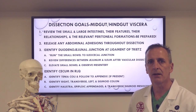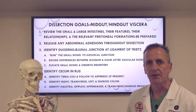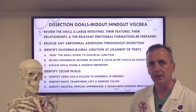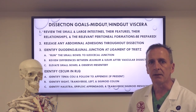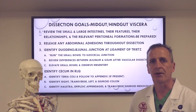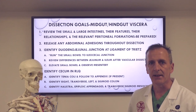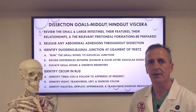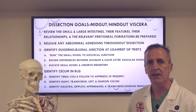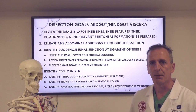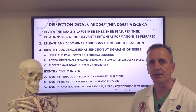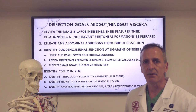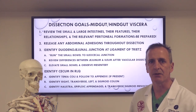Next, follow the large intestine around and identify its right or ascending portion, its transverse portion, its left or descending portion, and then the mobile sigmoid portion in the left lower quadrant. Make sure you take a look at the external features of the large intestine: the sacculations or haustra that are created by the taenia coli, the fat tags or epiploic appendages, as well as the mobility of the transverse and sigmoid colons as their mesentery is loosely attached to the posterior abdominal wall.